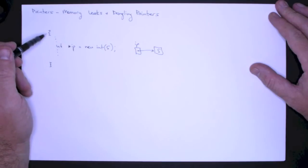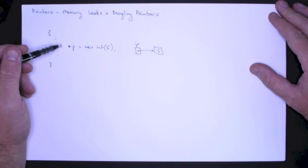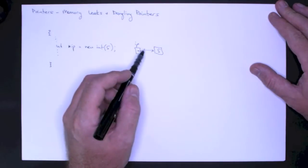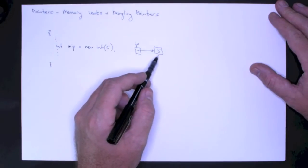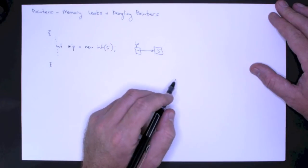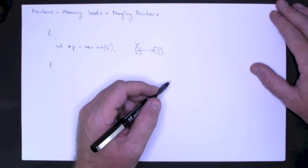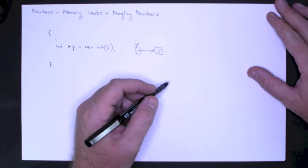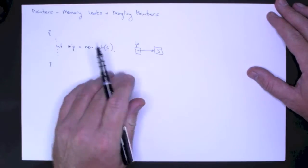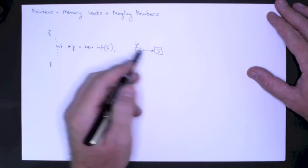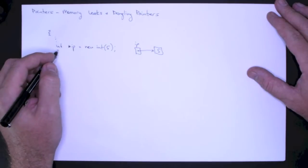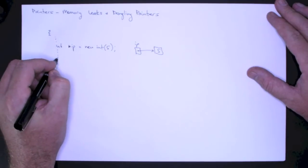This could be a block that we call over and over and over again. And every single time this block executes, you're going to leave an integer in memory. So if your program does this enough, it'll eventually run out of memory and crash. So we call that a memory leak. That's one example if we were to leave this. And of course, to fix this, for every new, there must be a corresponding delete.